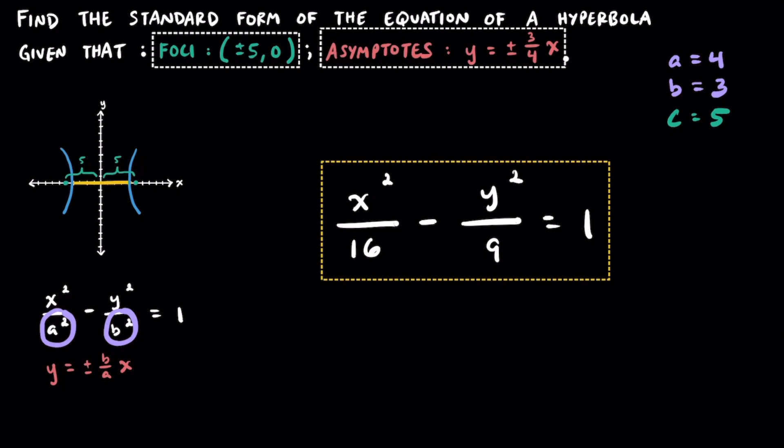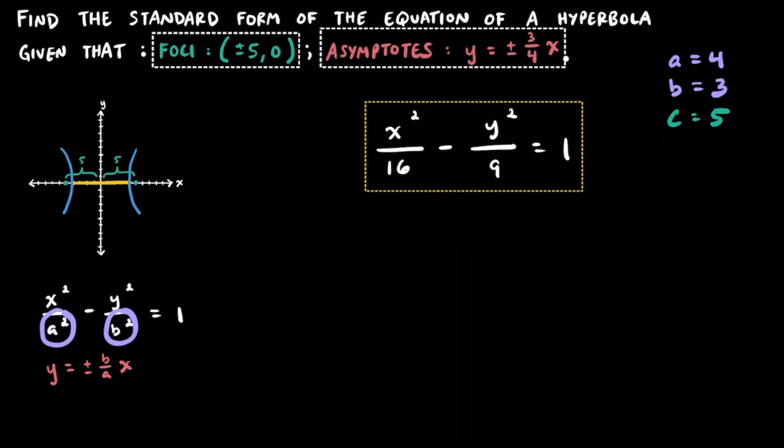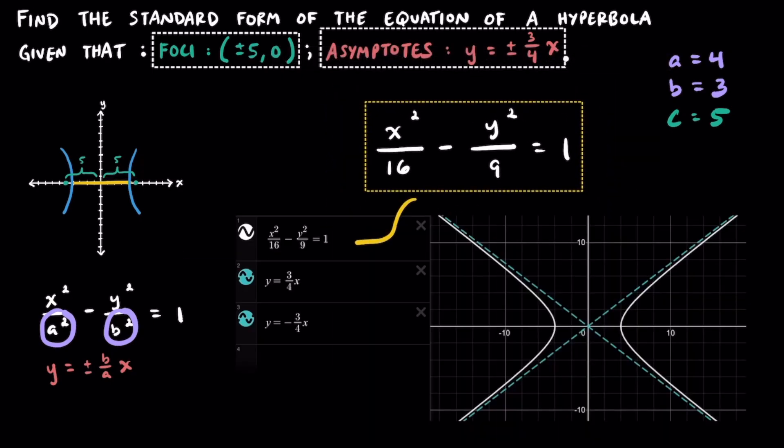This right here should be the equation of a hyperbola given that the foci is plus or minus 5 comma 0. And the asymptotes are y is equal to plus or minus 3 fourths x. Let me see if I can pull up a picture of that on a graph to show you. So you can see that I graphed this same exact equation. And these are the equations of our two asymptotes.